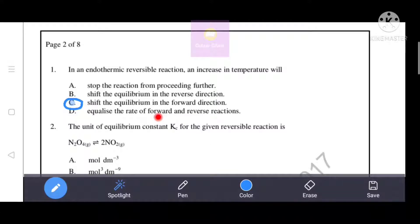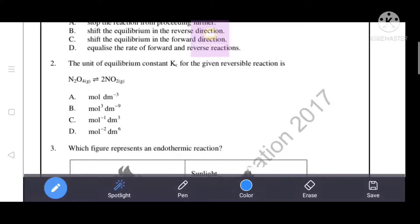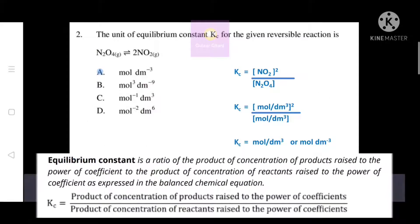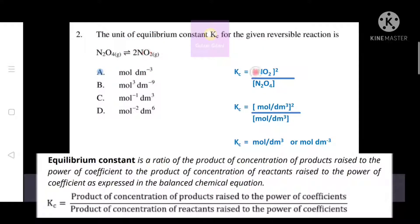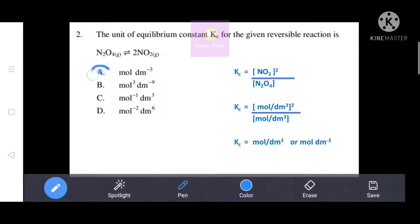Option D - equalize the rate of forward and reverse reactions - is incorrect. Option C is the correct answer. Next question: the unit of equilibrium constant Kc for the given reversible reaction. Kc is a ratio of the product of concentration of products raised to the power of their coefficients to the product of concentration of reactants raised to the power of their coefficients, as expressed in the balanced chemical equation. After cancelling units, Kc has units of mol per dm³. Option A is the correct answer.